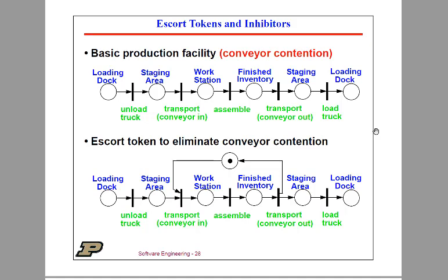Now that's going to enable the transport operation. In other words, there's a conveyor that goes from the staging area into the workstation. So now this is ready to operate, and the kit of parts appears at the workstation. Once there's a kit there, then it can be assembled.